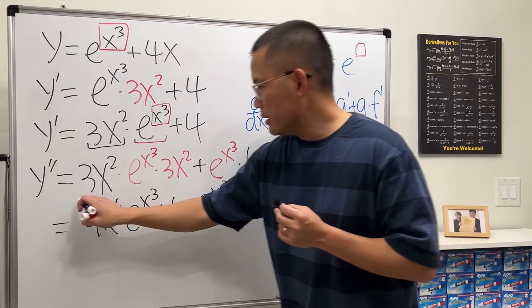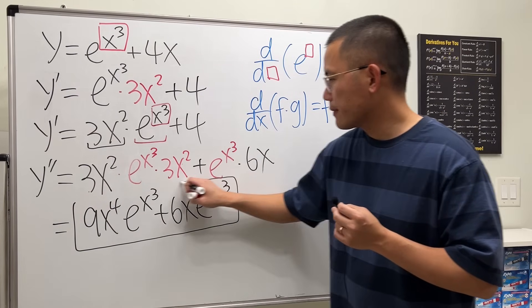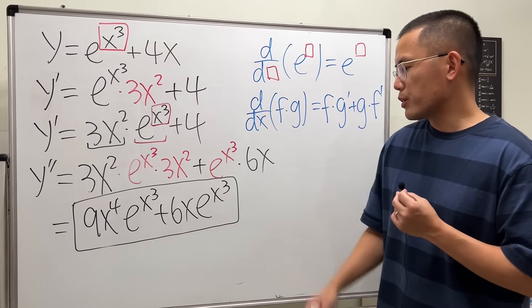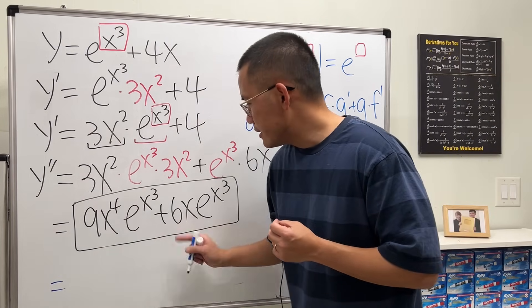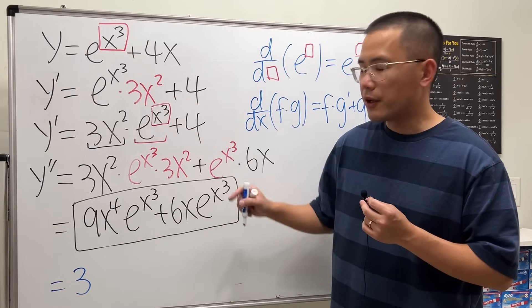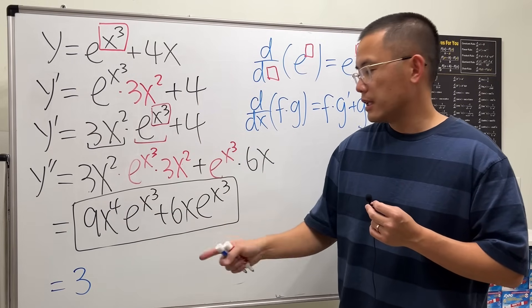out the answer, so I'm going to write that down for you too. 9 and 6 we can factor out as 3. x⁴ and x¹ - we can factor out x¹, the smaller exponent. This and that in common, so I'm going to take it out. Now, 9 divided by